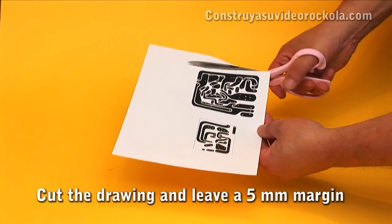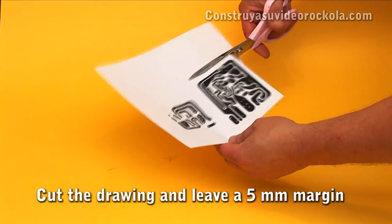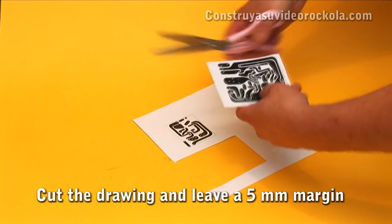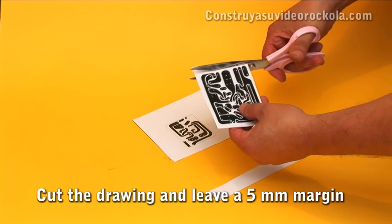We now proceed to cut the drawing, leaving a tab of about 5mm on each side. You have a margin of error for the time to move the drawing to the bakelite.